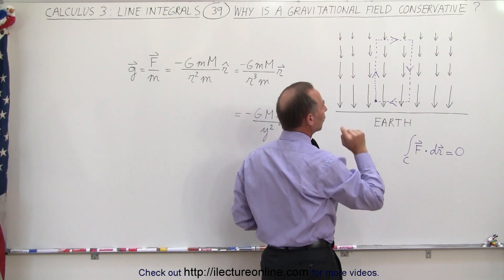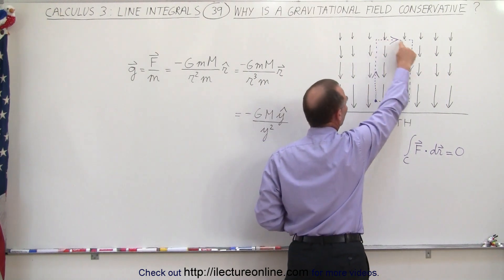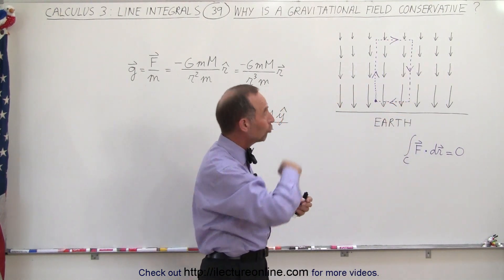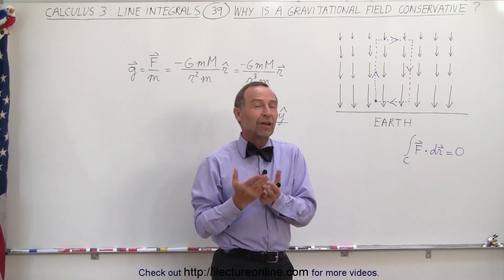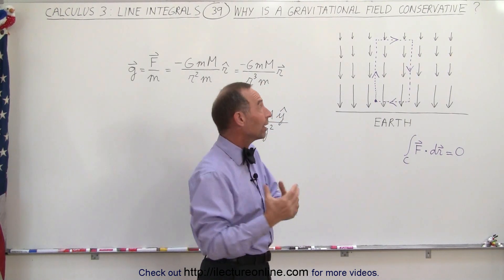We're now going to take a path, a circular path, or in this case a rectangular path, a closed loop path in that vector field. We've done it in a rectangular fashion because it makes it easier to see why it's conservative.